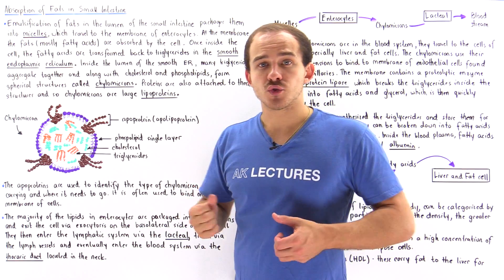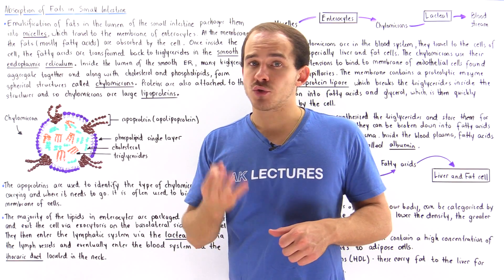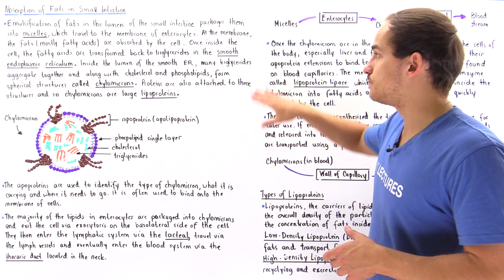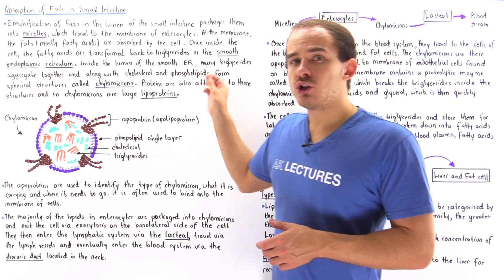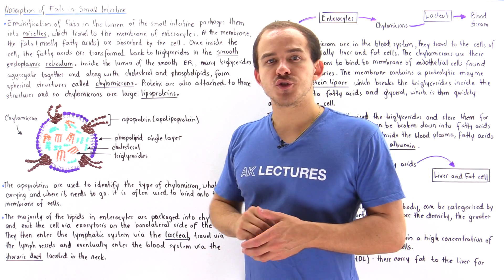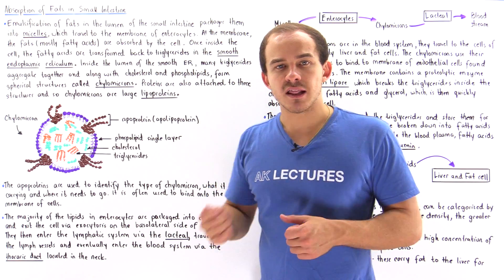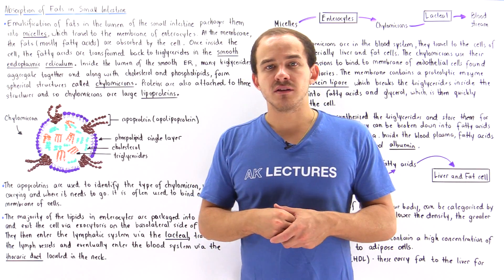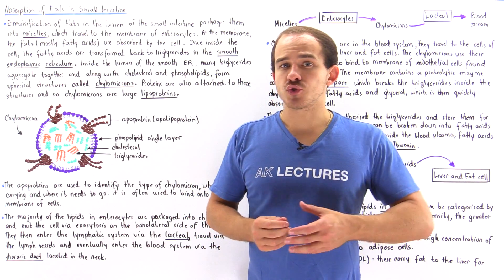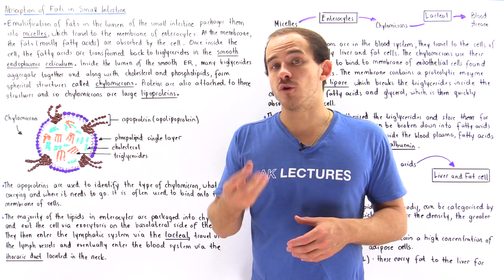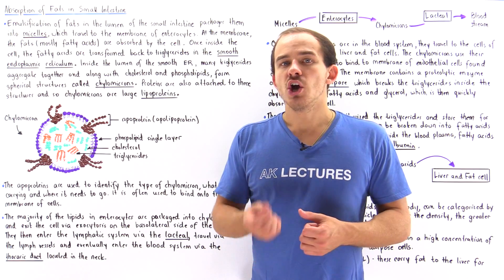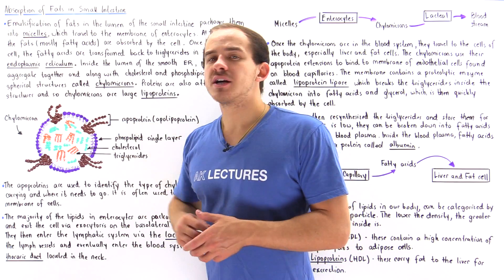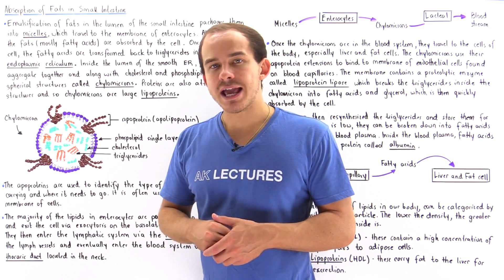A triglyceride contains three fatty acids and a single glycerol. Within the lumen of the smooth endoplasmic reticulum of enterocytes, many of these triglycerides as well as cholesterol and phospholipid molecules combine to form a particle known as the chylomicron.